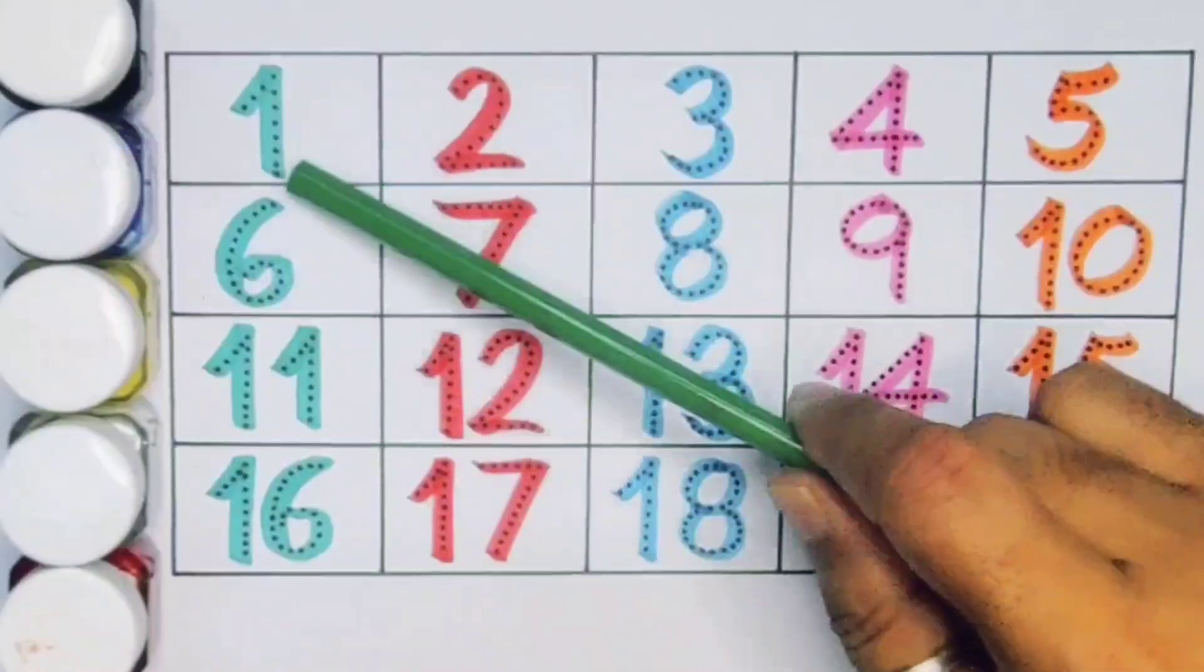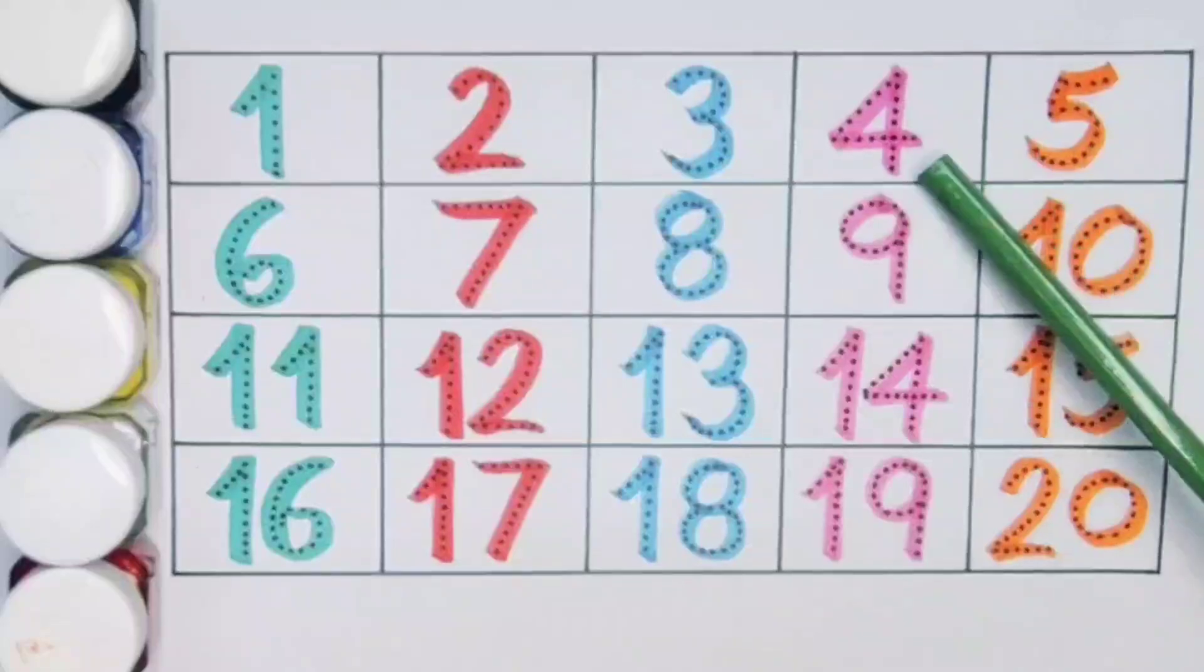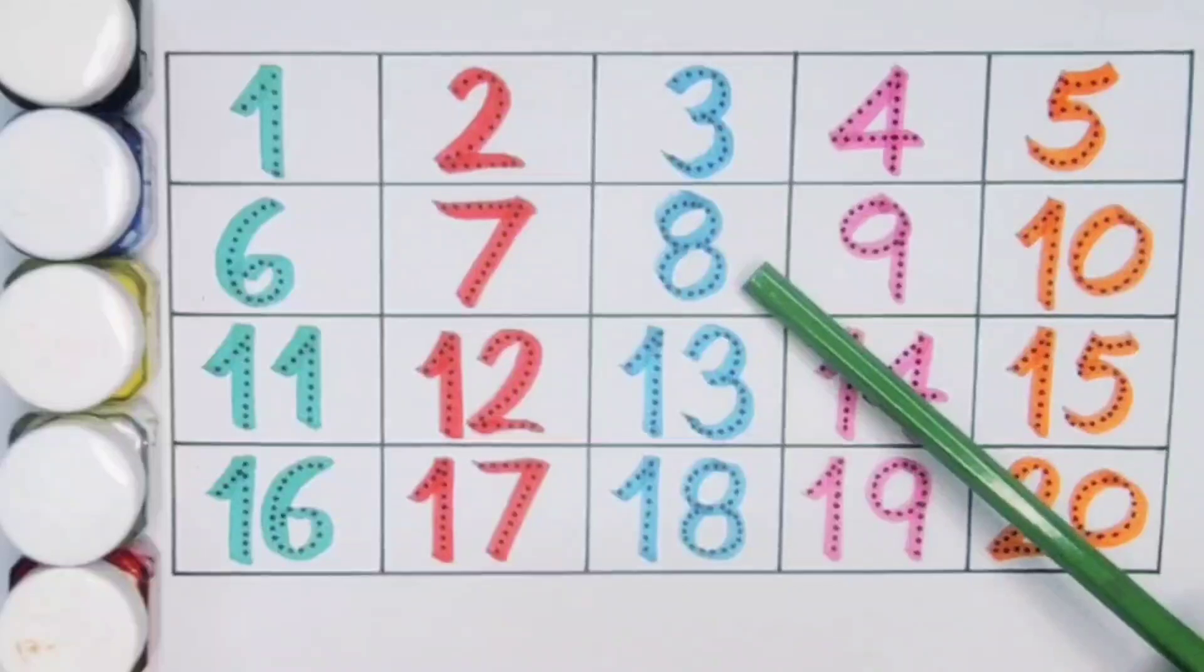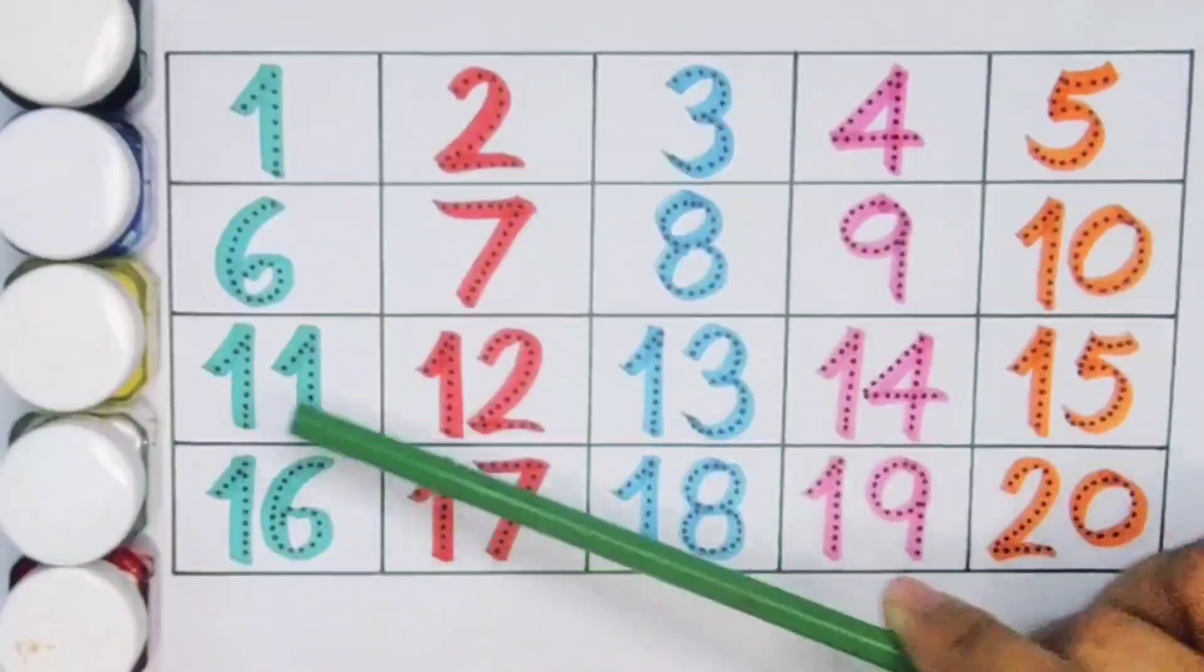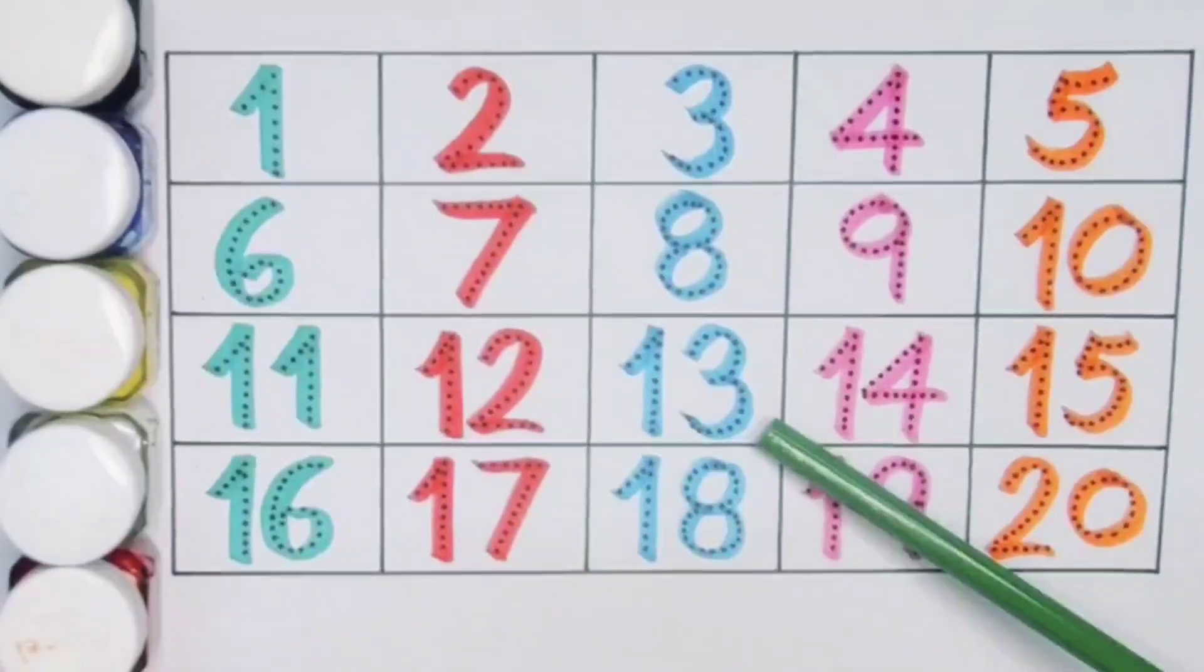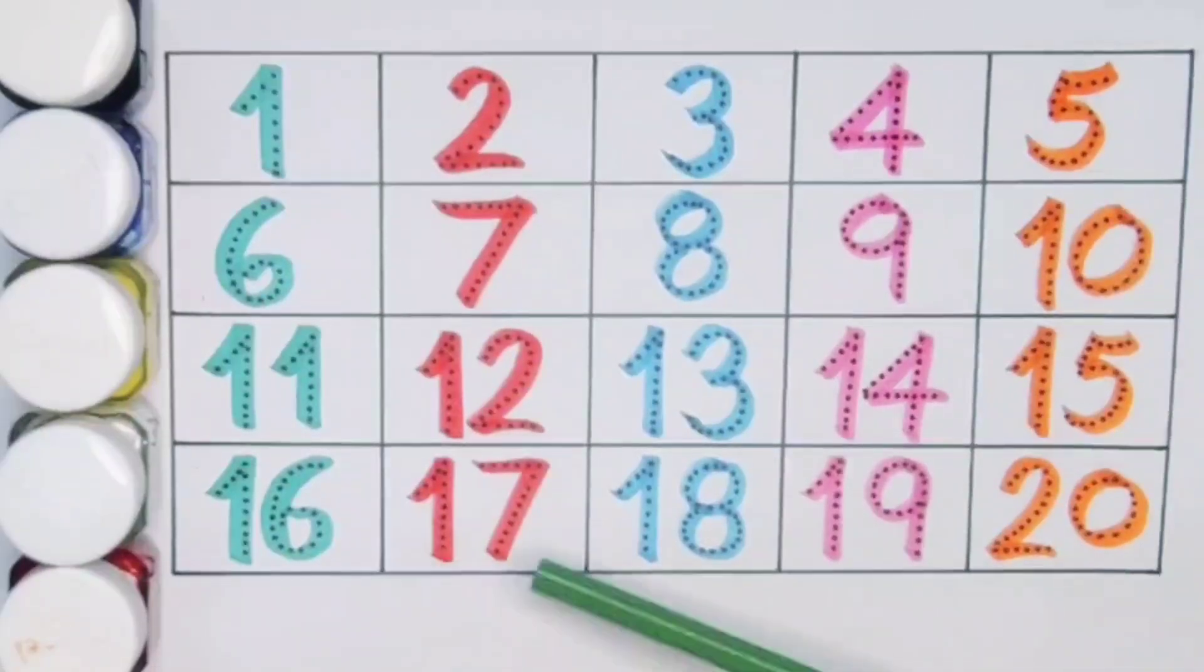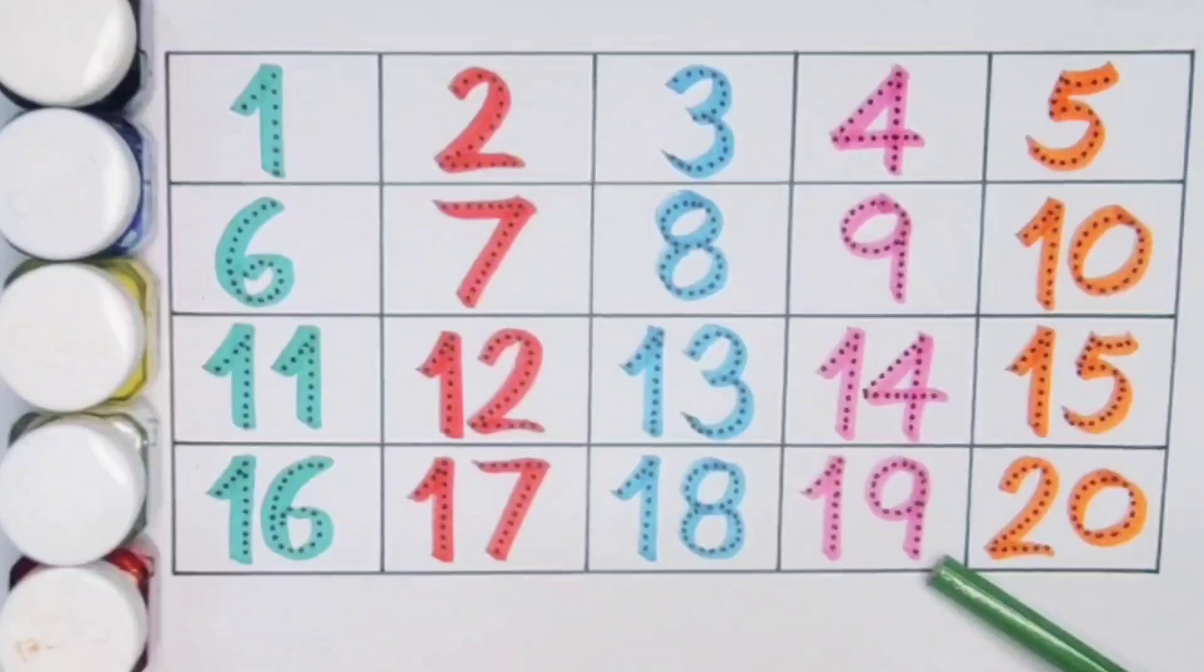What we learn? We learn 1, 2, 3, 4, 5, 6, 7, 8, 9, 10, 11, 12, 13, 14, 15, 16, 17, 18, 19, 20.